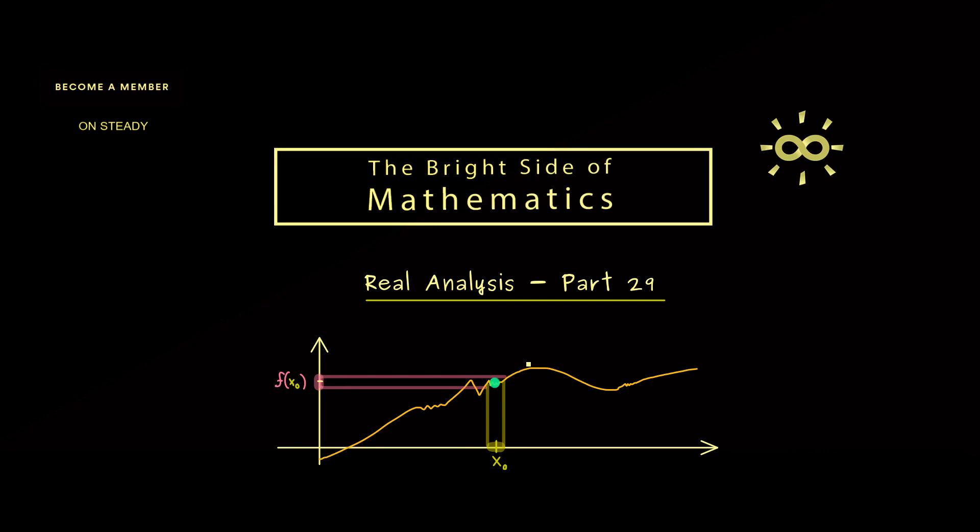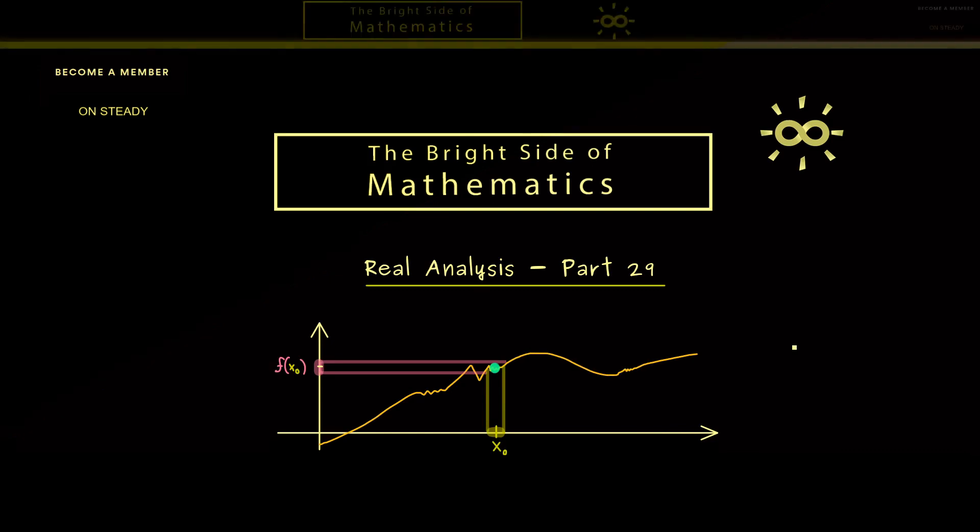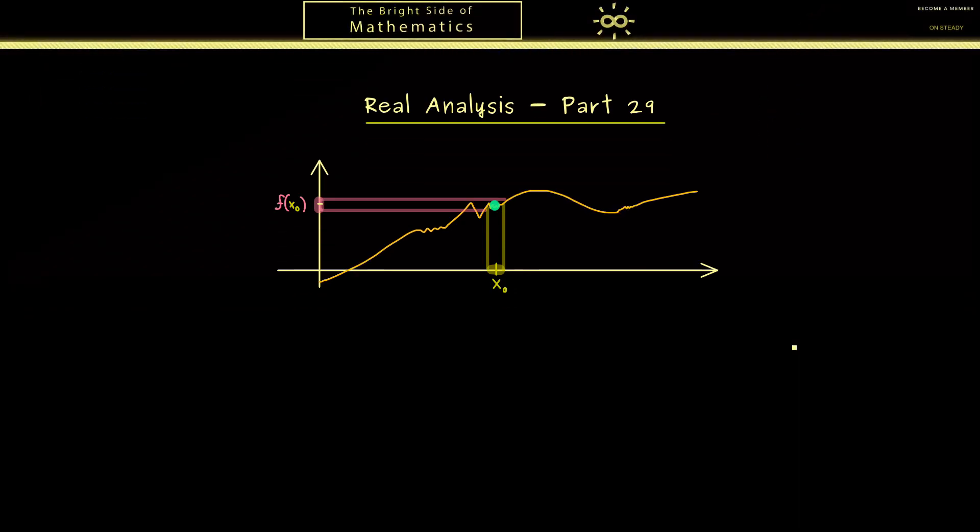It's the same thing we did with sequences at the beginning of the course where we introduced the limit theorems. Therefore instead of showing the definition all the time we could just state the limit theorems to show convergence. And now we want to do a similar thing for continuous functions.